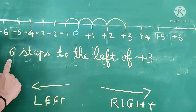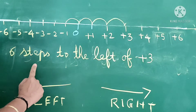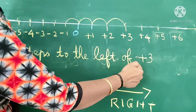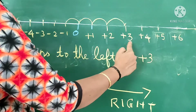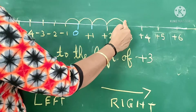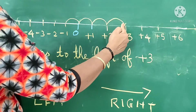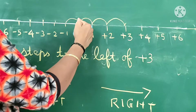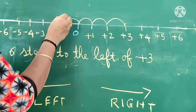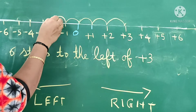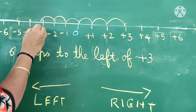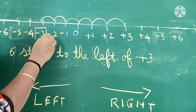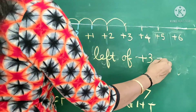Now, 6 steps to the left of positive 3. Positive 3 is here. We are going to take 6 steps: 1, 2, 3, 4, 5, and 6. The answer is equal to negative 3.